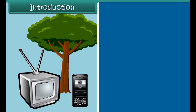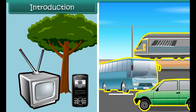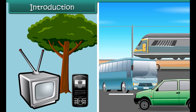Look around yourself and you will find objects of different kinds such as television, mobile, trees, cars, buses, trains, etc. Objects such as television, mobile, trees, etc. are static.